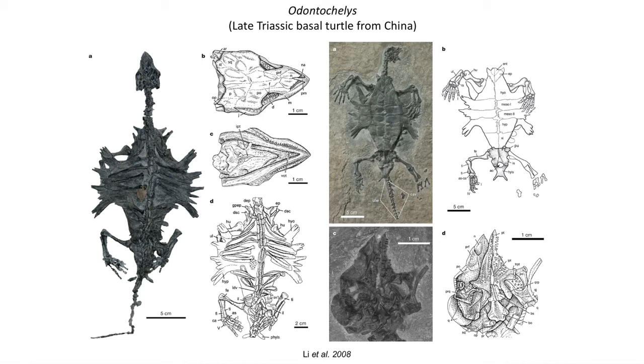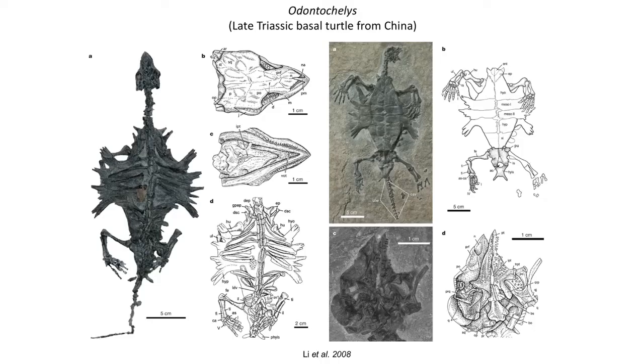Odontochelys had spike-like ribs which resemble modern soft-shell turtles, but the ribs are not as well developed into a bony shell or plates, although the ribs could have supported a keratin shell. One of the interesting primitive features of Odontochelys is that it had both a long neck and long tail with more lizard-like proportions, indicating that Odontochelys did not tuck its head into the shell like modern turtles do. Long tails in fossil turtles are fairly common, despite living turtles having shorter tails that can often fit inside the shell.